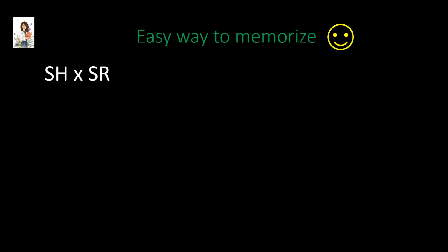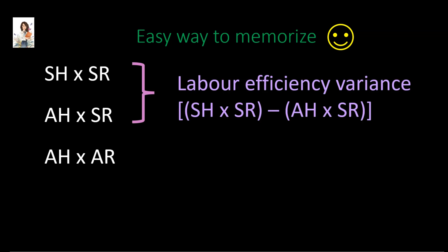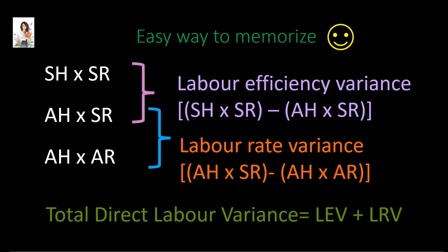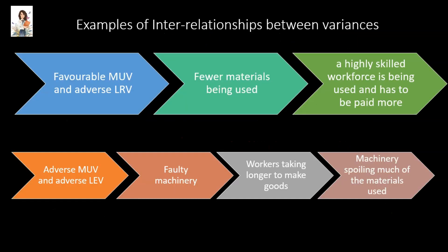Again, there is an easy way to learn the formulas. First, write standard labor hours multiplied by standard wage rate. Then change the first term and write actual labor hours multiplied by standard wage rate. Then change the second term and write actual labor hours multiplied by actual wage rate. The difference between the first two lines of the grid is the labor efficiency variance. The difference between the last two lines of the grid is the labor rate variance. Once you have found both variances, the total direct labor variance is the addition of these two.